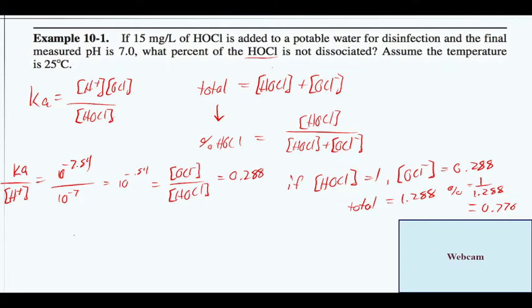The other way you can do this if you decide to is to say instead of just going Ka over H+ and filling all that in, you could leave it as Ka over H+ and say that is equal to OCl- divided by HOCl, and then plug that into our total form.